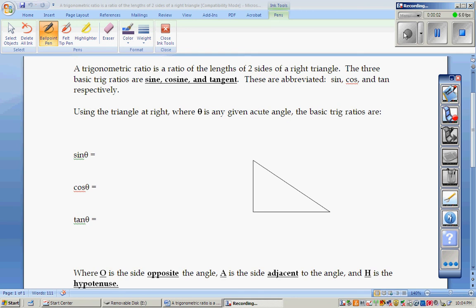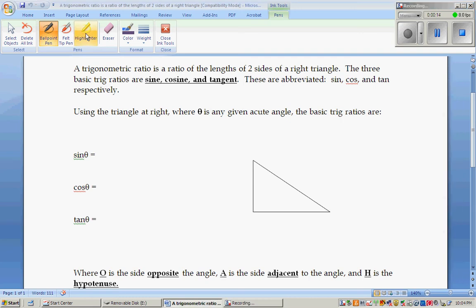A trigonometric ratio is just the ratio of two sides of a right triangle. The Greeks went and named the different combinations. So, the three basic trig ratios are sine, cosine, and tangent.